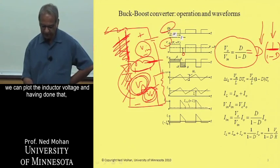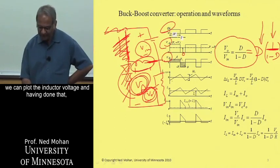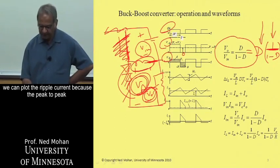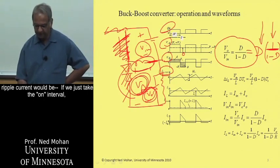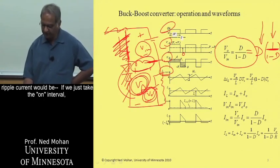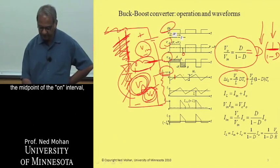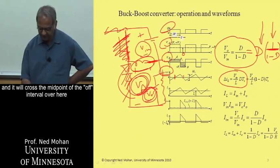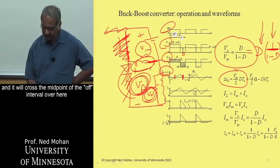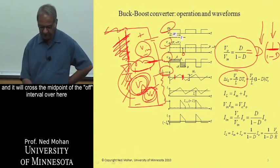And having done that, we can plot the ripple current, because the peak-to-peak ripple current, if we just take the on interval, is given by this expression here, and it'll cross the zero axis at the midpoint of the on interval, and it'll cross the midpoint of the off interval over here. And the average current through this inductor,